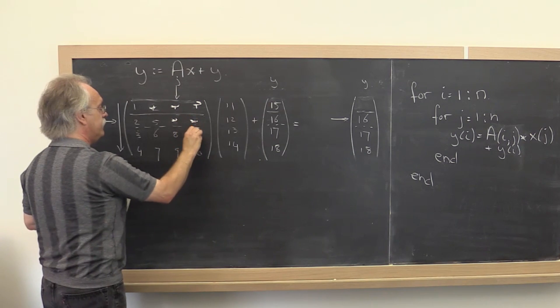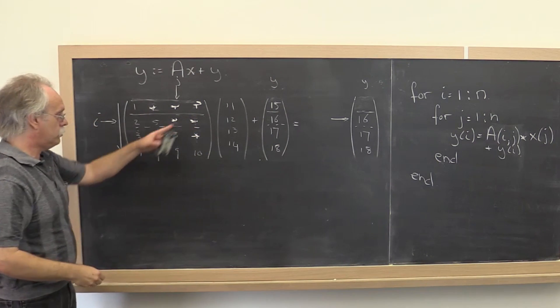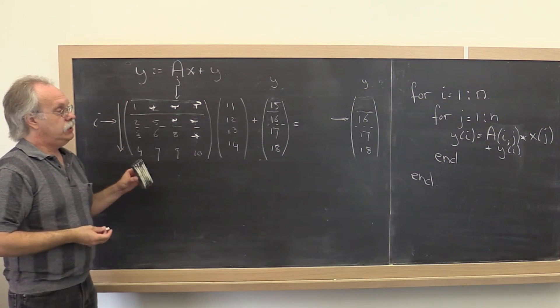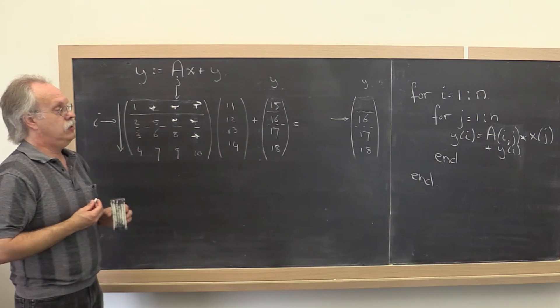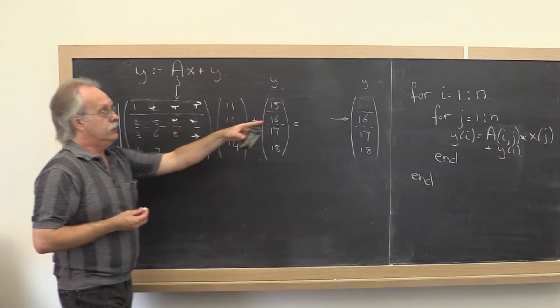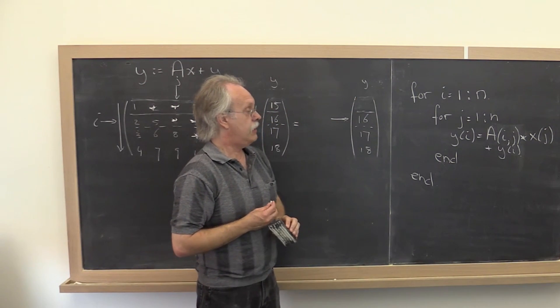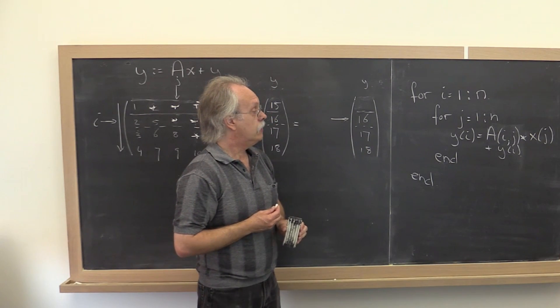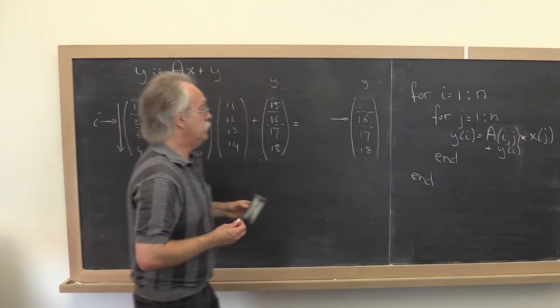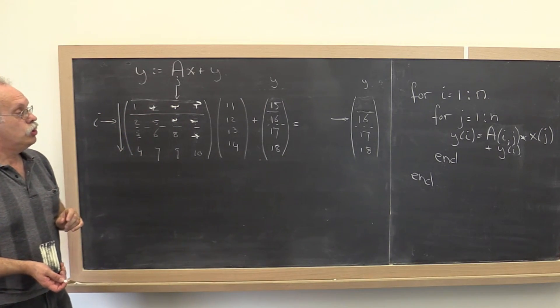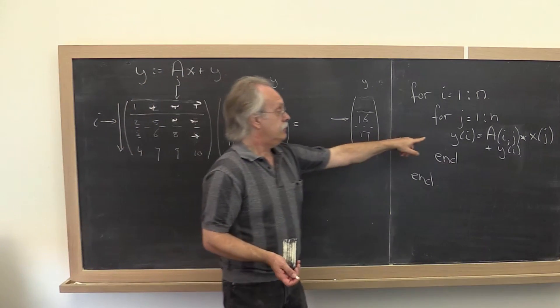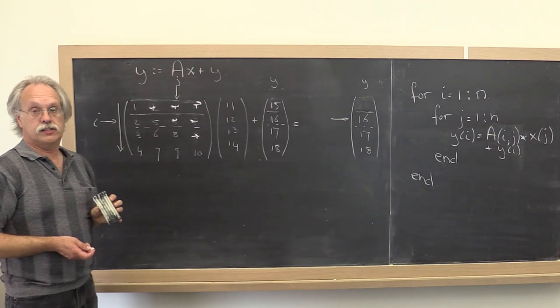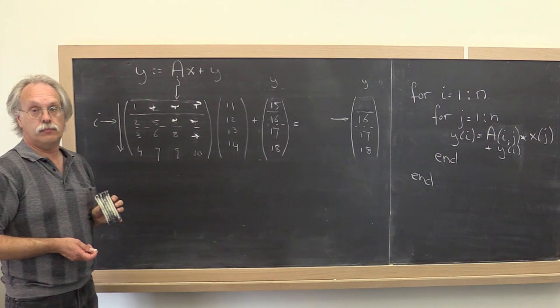Now notice that the entries above the diagonal are stored, they're just not stored in the natural place. What I want you to do is do the exercise of changing this MATLAB code, this MATLAB program, from one that just deals with it as if it's a general matrix to one that deals with it taking advantage of the fact that the matrix is symmetric and only the lower triangular part is stored.